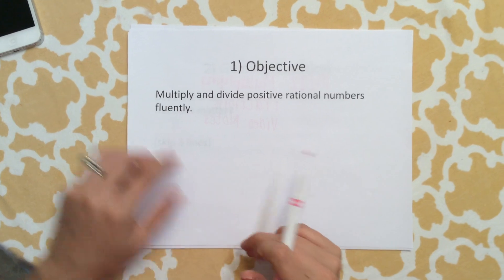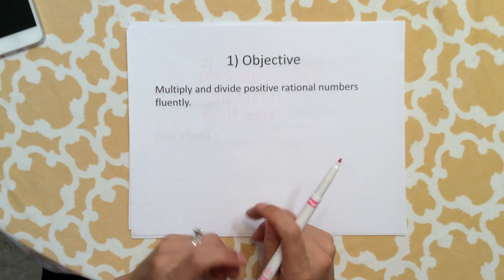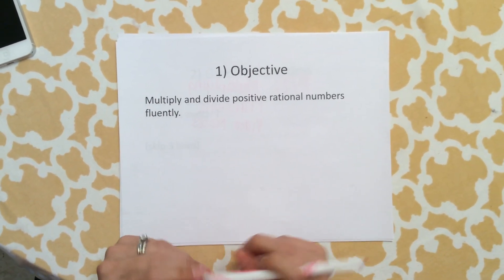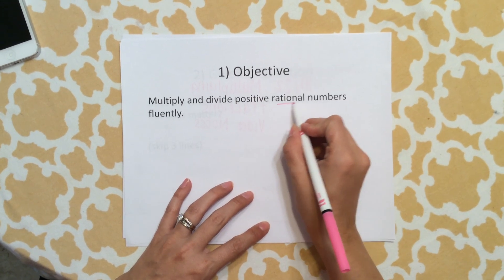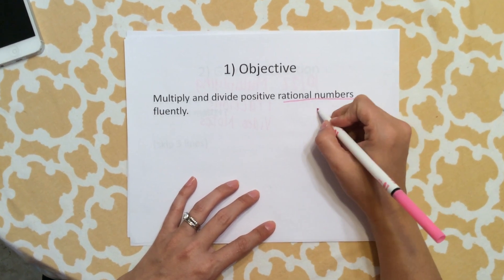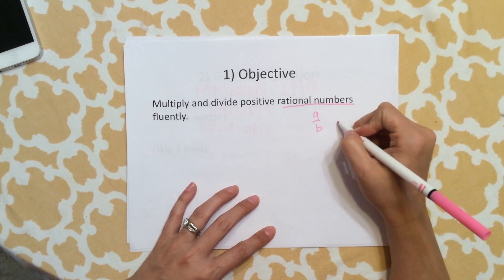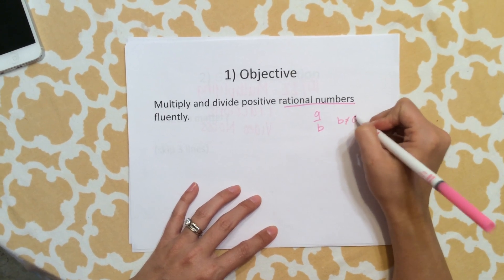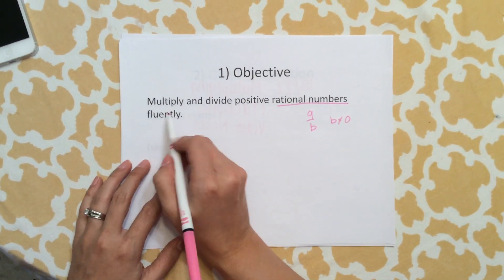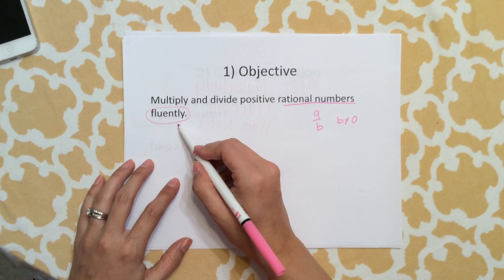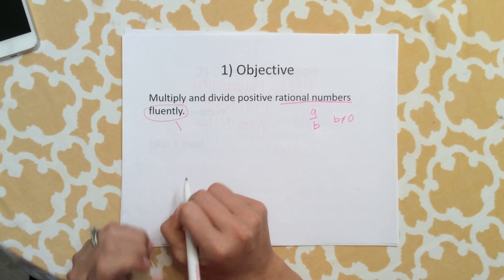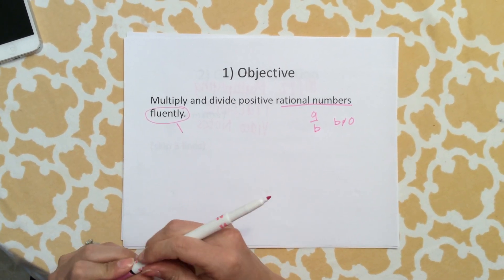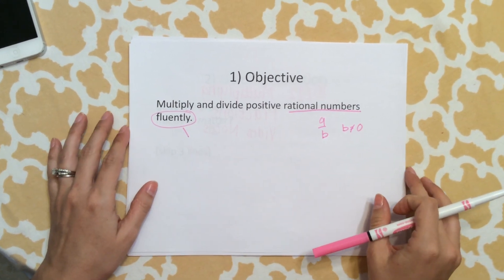Number one, write your objective: multiply and divide positive rational numbers fluently. Remember, rational numbers are any numbers that can be written as a over b where b is not zero, and fluently means with ease and quickly. We're going to work on multiplying positive rational numbers fluently.